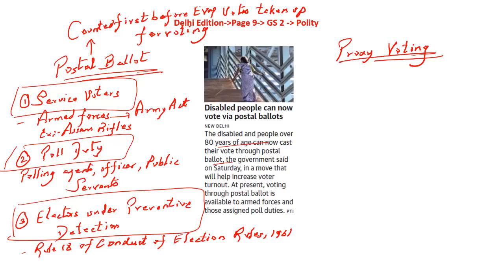Proxy voting allows a registered elector to delegate his voting rights to a representative he nominates. This option is usually available for armed forces, police, and government officials posted outside India. For example, if I am the High Commissioner or Ambassador for India working in the United States of America, or a soldier guarding the embassy there, I may not be able to physically make my presence in India.